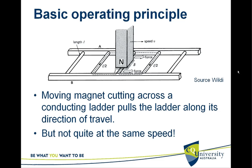If you imagine a conducting ladder with a moving magnet cutting across it, the magnet pulls the ladder along its direction of travel. This is a moving magnet moved over a conducting ladder, and the crossbars are all conducting.